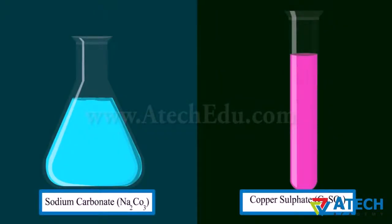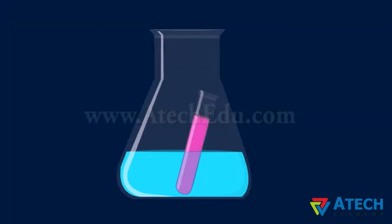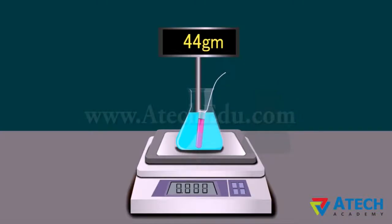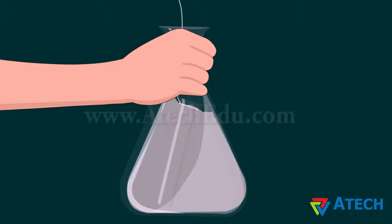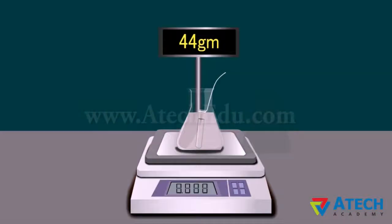Let us prove it by an experiment. Take a little solution of sodium carbonate in a conical flask and a little copper sulphate in a test tube. Hang the test tube in the flask, put a cork on the flask, and weigh this assembly — it weighs 44 grams. Now tilt and swirl the flask so that the two solutions mix. Weigh the assembly again — it still weighs 44 grams.